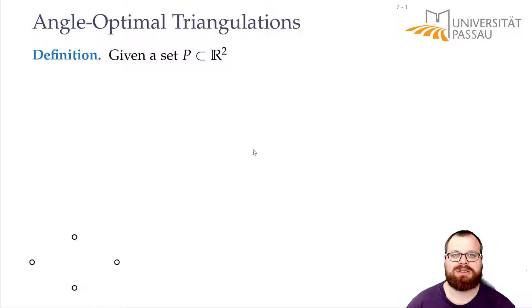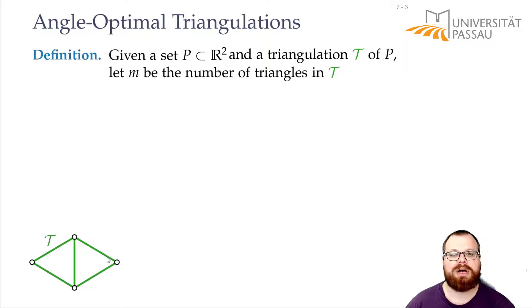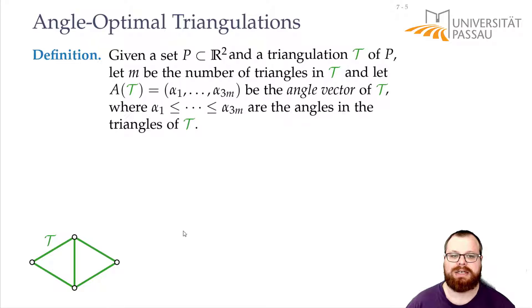And for that we want to use the so-called angle vector of a triangulation. So let's say we have some point set and we have some triangulation. And there are m triangles in this triangulation. Then the angle vector is just a vector of all the angles that we have in this triangulation, but sorted non-decreasingly. So alpha 1 is the smallest angle in this triangulation, and alpha 3m is the largest one. We have m triangles, so there are 3m angles.